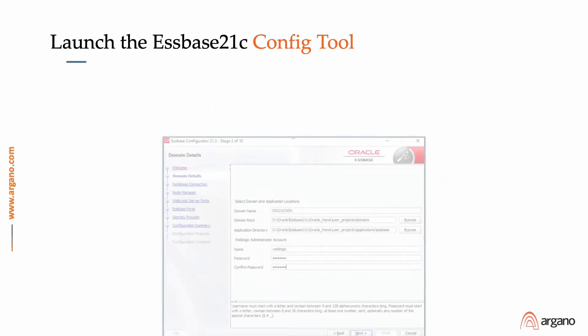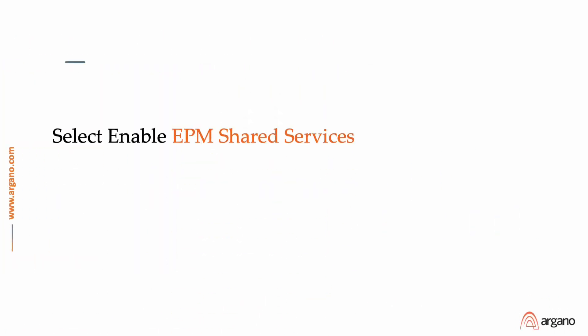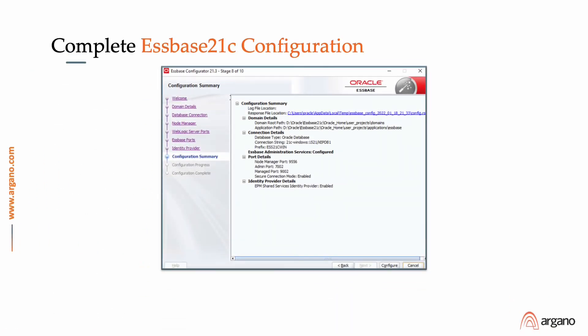We then launch the S-SPACE 21C configuration tool and select the appropriate parameters. Once we reach the screen for Shared Services, we select the checkbox to enable EPM Shared Services identity provider. This establishes our Shared Services integration with S-SPACE 21C. We allow the configuration tool to complete, and our integration with Shared Services is also complete.